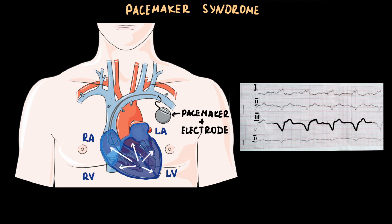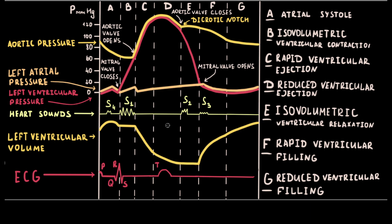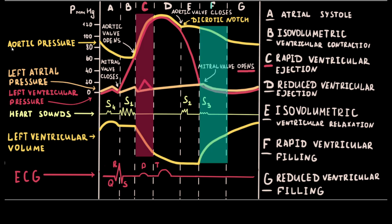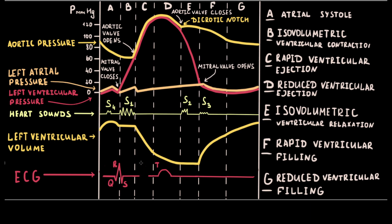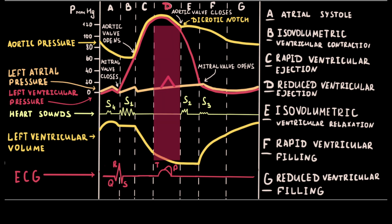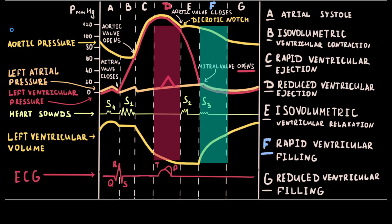Another cause of AV synchrony loss is retrograde conduction from the ventricle to the atria, when the atria are depolarized just after ventricular depolarization. When the sinus P wave is located in the ST segment of the pacemaker contraction, atrial systole and the rise in left atrial pressure occur during the rapid ventricular ejection phase, when the AV valves are closed. Therefore AV synchrony is lost. The same situation occurs with retrograde ventricular conduction. When the P wave merges with the T wave, atrial systole occurs during the reduced ventricular ejection phase, when AV valves are still closed, and AV synchrony is again lost.